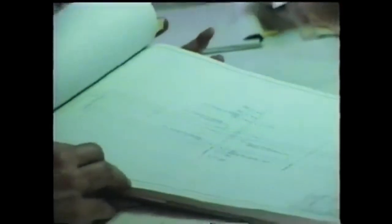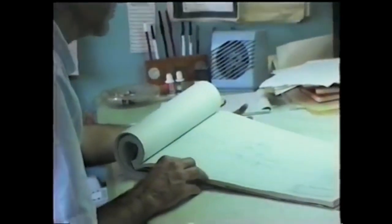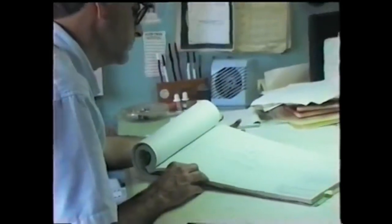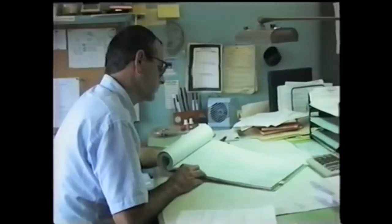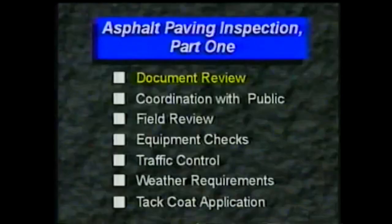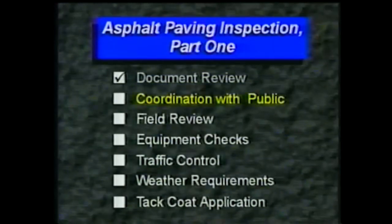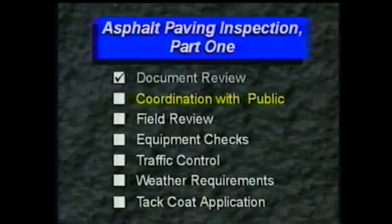And remember, no changes should be made to the traffic control plan unless the changes have been approved in writing by your agency. After reviewing all the project documents, find out what plans have been made to coordinate the paving operation with the utilities, businesses, and residents who will be affected.